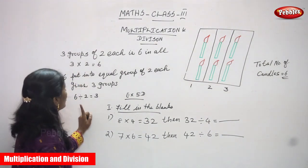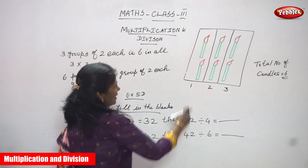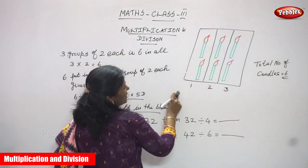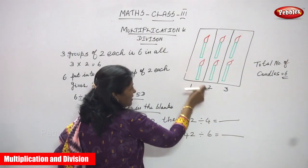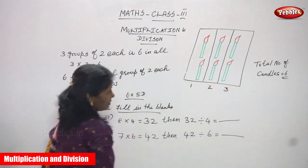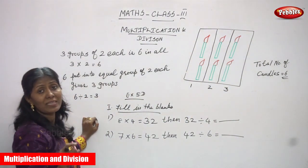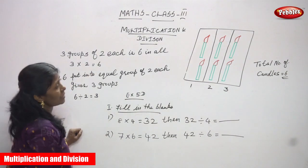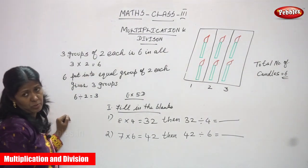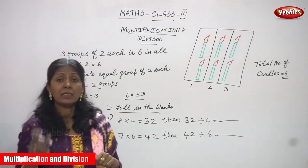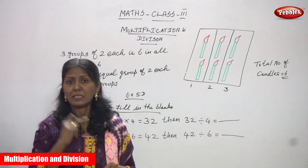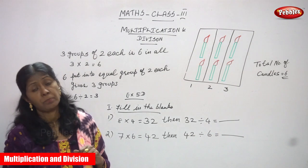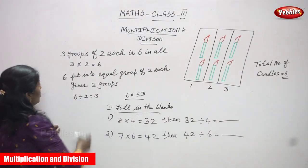Three groups of two each in six, and all three into six. How many groups have I divided into? Three groups. Each group has two candles: first group two candles, second group two candles, third group two candles. We divide into three groups, each with two candles. Three groups into two candles each gives a total of six — that is multiplication.